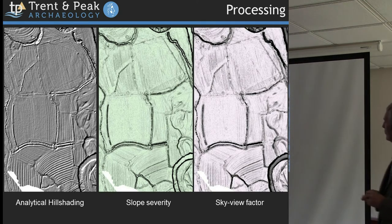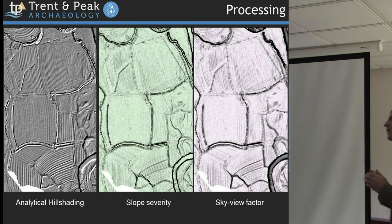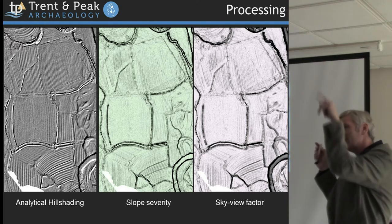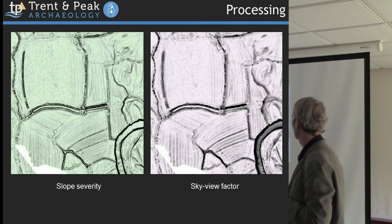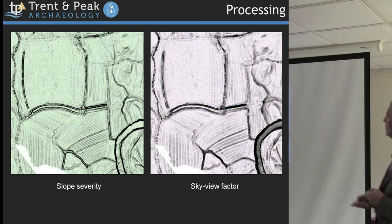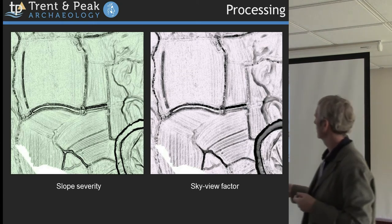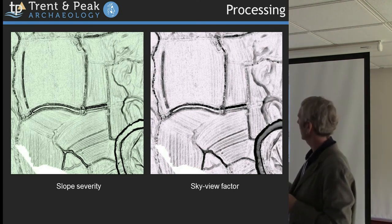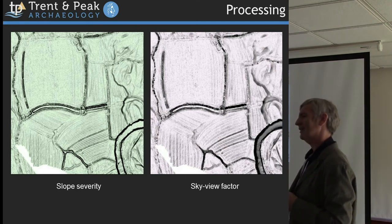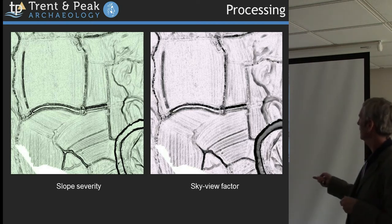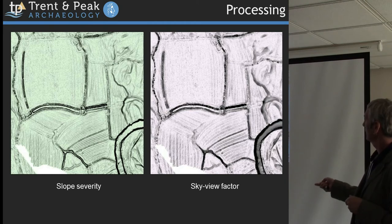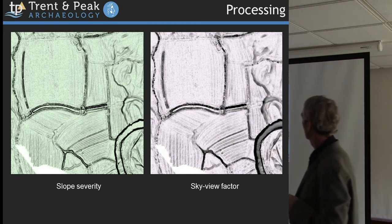Sky view factor is a slightly odd one. It's imagining applying shading — dark or light — depending on how much of the sky you can see. Another way to conceive it is to think of the whole bowl of the sky as a uniform light source. If you're down at the bottom of a well you can see very little sky — that's dark. If you're on top of a wide open flat plane you can see the whole sky — that's light. They all have their different merits. With slope mapping you can't always tell whether it's a slope up or a slope down — whether a steep slope ending in a flat bit is a bank going up or a ditch going down. With sky view factor you can see more clearly that these are ditches, as part of the water meadow system.